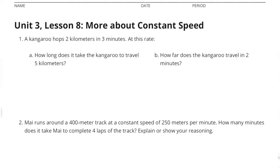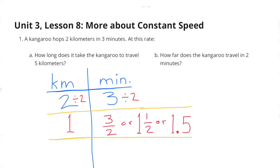Unit 3 Lesson 8: More About Constant Speed. Number one: the kangaroo hops two kilometers in three minutes. At this rate, how long does it take the kangaroo to travel five kilometers? I created a table with kilometers on the left and minutes on the right.